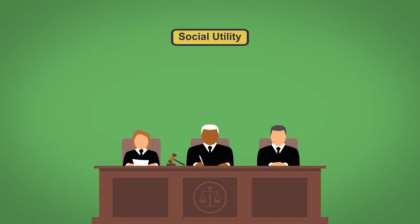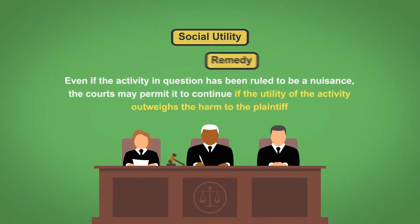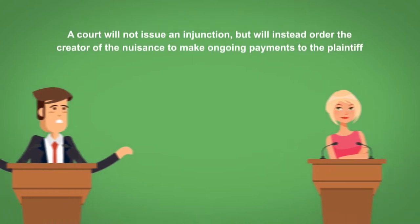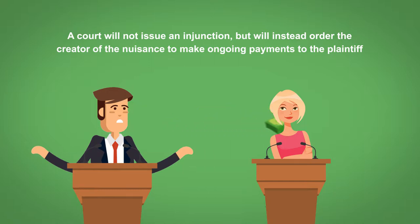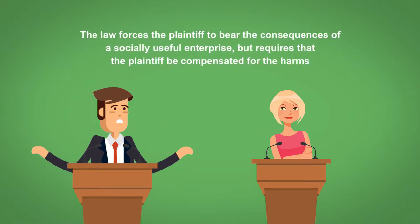Just as courts may consider social utility when determining liability, courts may consider social utility when determining the appropriate remedy. Even if the activity in question had been ruled to be a nuisance, the courts may permit it to continue if the utility of the activity outweighs the harm to the plaintiff. In such cases, a court will not issue an injunction but will instead order the creator of the nuisance to make ongoing payments to the plaintiff. Effectively, the law forces the plaintiff to bear the consequences of a socially useful enterprise, but requires that the plaintiff be compensated for the harms.